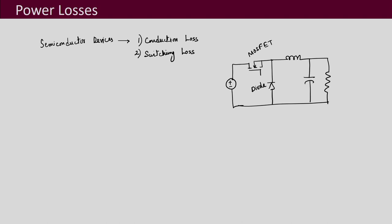Apart from this, the converter also has L, which is the magnetics, and that will also have its own loss. These magnetics losses also contribute to the total loss and there are two types: one is your core loss and the second is your copper loss. Both of these we will be discussing when we discuss magnetics design.